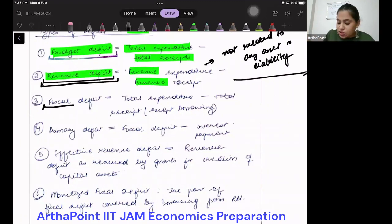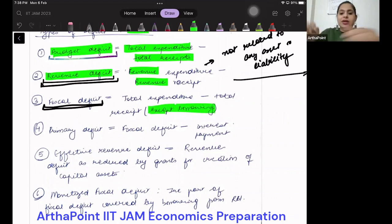Fiscal deficit is very similar to budget deficit. If you notice, it's total expenditure minus total receipt, but we don't include borrowings. So all receipts of the government other than borrowing—if I am not including the borrowings of the government, then that is fiscal deficit in nature.